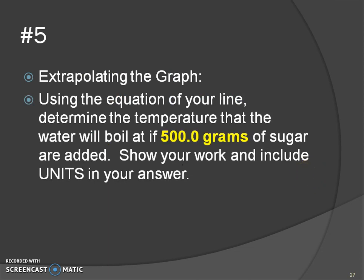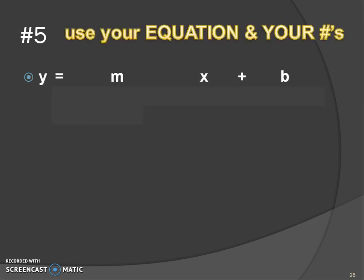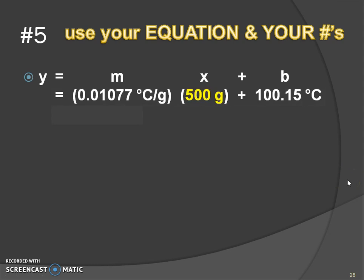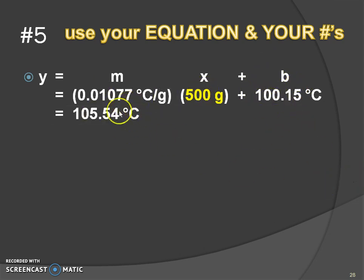Now we're going to extrapolate the graph. Pause and read, then see if you can figure it out. If we're using 500 grams, we plug into our equation of the line: use your slope, multiply by 500 grams, and add your y-intercept. We've already verified that our y value will be in degrees Celsius.